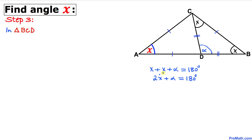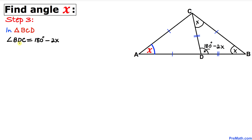Moving 2X to the right-hand side, alpha turns out to be 180 degrees minus 2X. Therefore angle BDC is 180 degrees minus 2X.